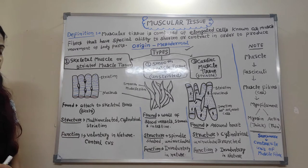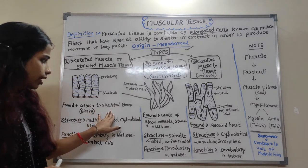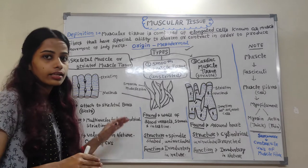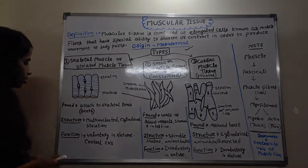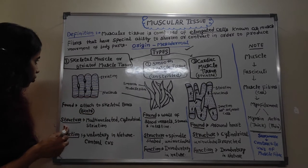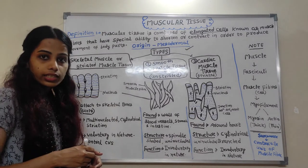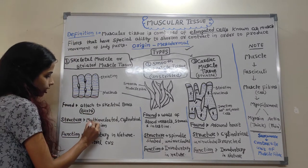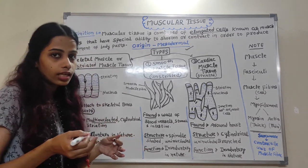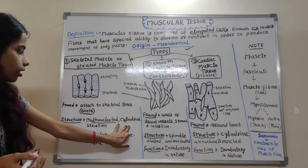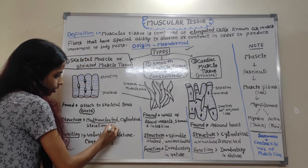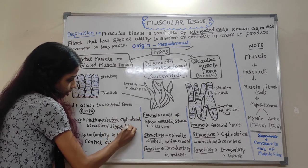Skeletal muscle is formed attached to the skeletal bone. Wherever we have bones, the skeletal muscle is attached there — we can see this in the biceps. The structure is multinucleated, cylindrical in shape, and striations are formed, meaning light and dark bands are present.